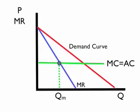And with that amount of output, there's an associated price. Go up to the demand curve at that quantity, over to the left, and you read off the price from the vertical axis.